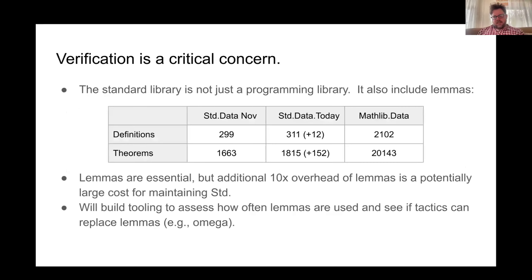Back in November I did some analysis: we had just under 300 definitions and 1,600 theorems. Today we've grown — we're slowly growing the number of definitions, and the number of theorems is going up faster as we round out missing lemmas — but we're still much smaller than Mathlib. That's because we really want to focus on things that are broadly useful and for which we can provide a stable interface.